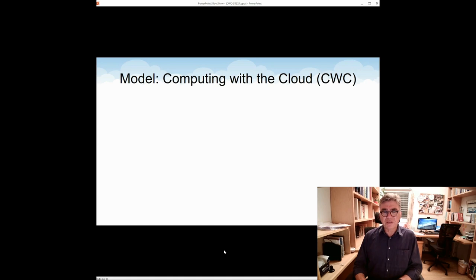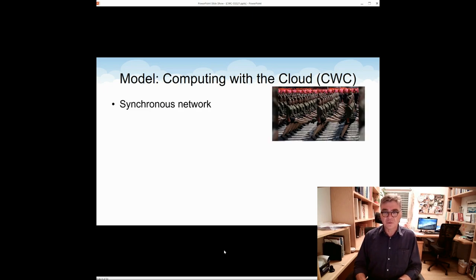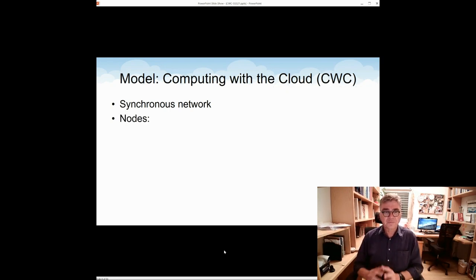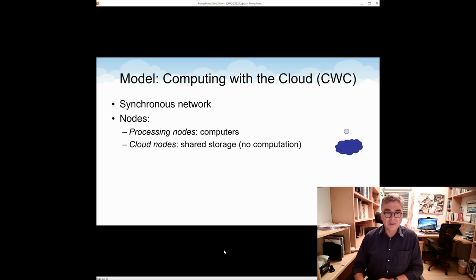So in the paper, we give a model we call Computing with the Cloud, CWC, and the main guidelines are the following. We have a synchronous network, namely the execution proceeds in lockstep rounds where all processes advance in synchrony. For the nodes, we have a traditional type of nodes. So each node is actually a computer. But we also have this new type of nodes called cloud nodes. A cloud node is just a shared storage. Let me be clear. No computation is done in the cloud nodes. So we are referring only to cloud storage, not computing clouds.